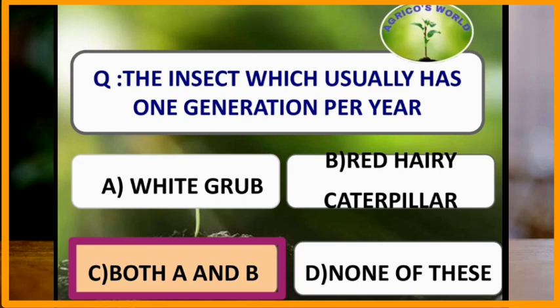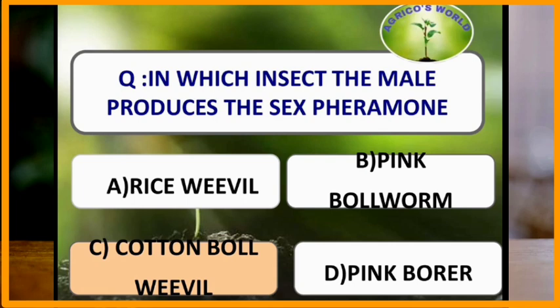In which insect does the male produce sex pheromones? In cotton boll weevil, the male insect produces sex pheromones. Usually sex pheromones are produced by the female, but in cotton boll weevil the male produces them.